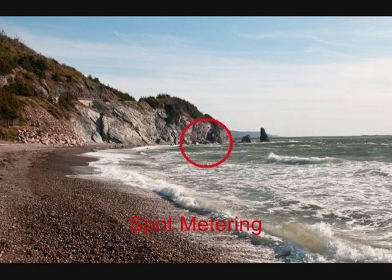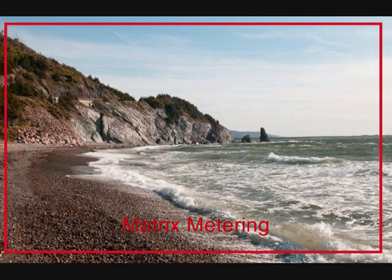Second, spot metering. This is when the circular area is a really small spot, which gives you more control over what you want to expose for. And finally, matrix metering. This uses an average calculation of the whole scene and all the light in that scene to calculate what the exposure should be to produce a good photograph.